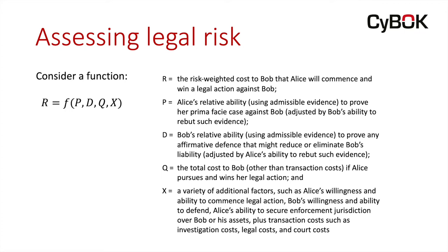I've laid out different ideas to try to get out the concept that you have to separate these into different categories. So the P term — Alice's relative ability to prove her case against Bob — well, the D term might then reduce the risk because Bob might have some affirmative defenses. Third, something that's very often overlooked by non-lawyers: forget about the rules for a minute — what's the punishment? Or what do we suffer as a loss if Alice wins her case? So if there's very little cost, maybe that will influence our analysis of legal risk. And finally, in the X category, there are a whole raft of additional factors — willingness, resource capability, things of that nature — that will influence this risk calculation.